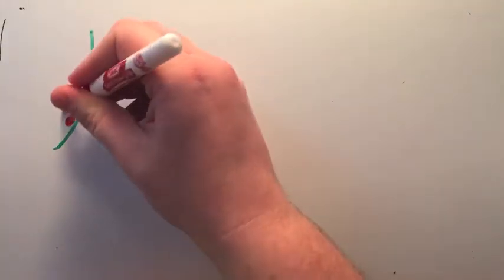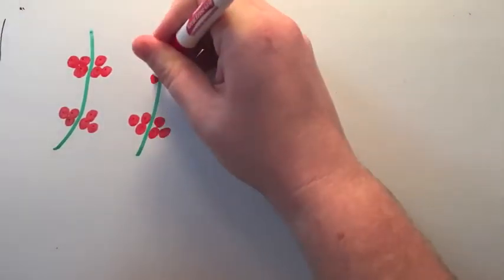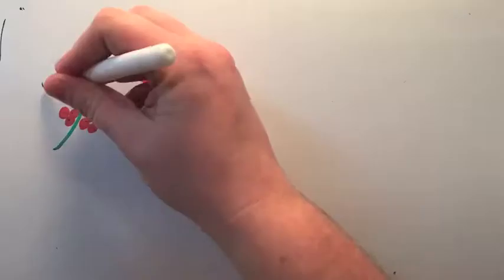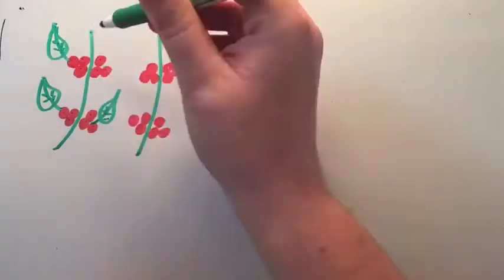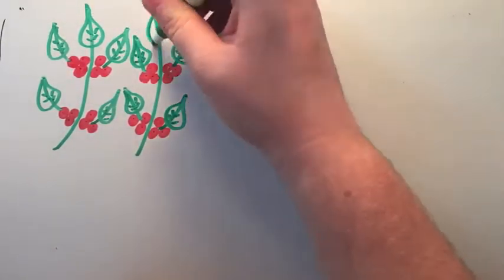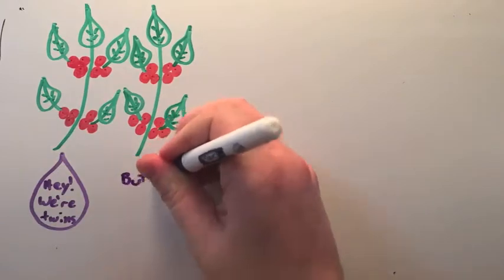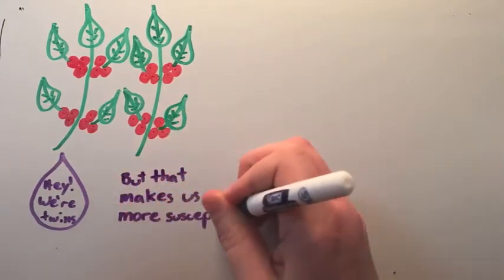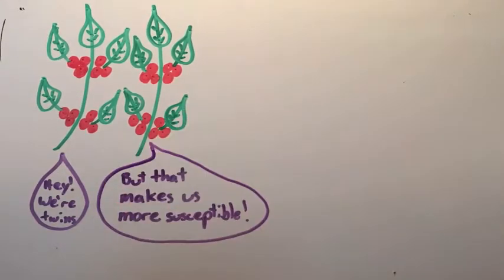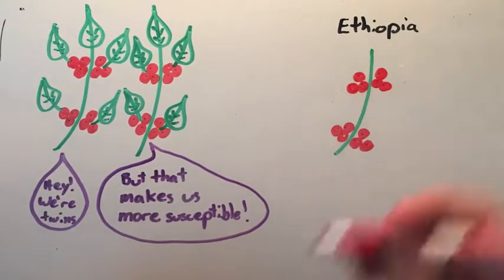Interestingly, almost all farmed coffee plants actually descend from a single tree dating back to 1713, leading to the genetic uniformity we have in coffee plants today. This is the reason that Hemileia vastatrix has been so successful at infecting coffee plants.